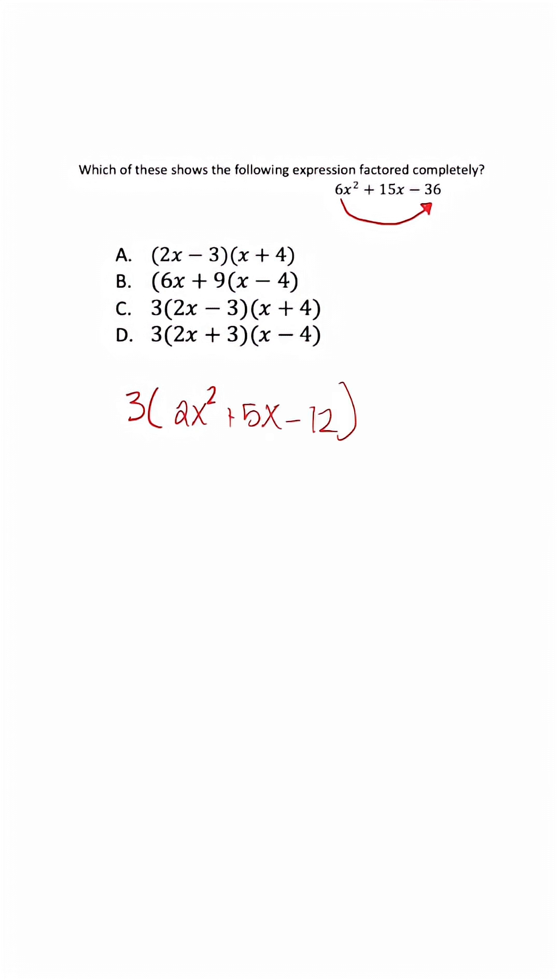Now at this step, I want to use the AC method. Once we multiply A and C, the factors will multiply to give us negative 24 and add to give us positive 5. So the best factors are positive 8 and negative 3.